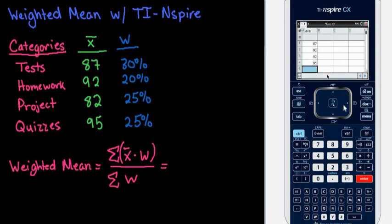And then we're going to do the same thing with the next column. So we're actually going to call this one the weight. So I'm going to use WEI for my weight.